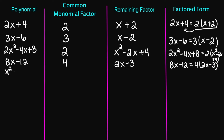Let's try x squared plus x. My common factor is going to be x. My remaining factor is going to be x plus 1. In my factored form, we have x squared plus x equals x times x plus 1.